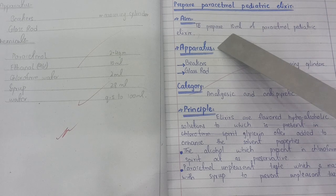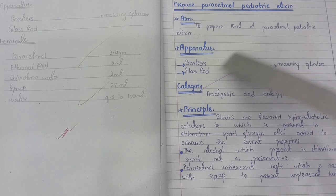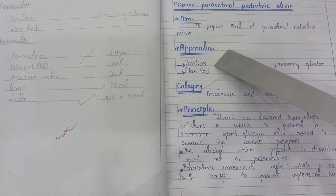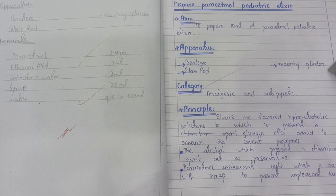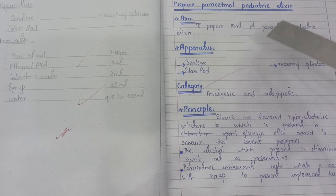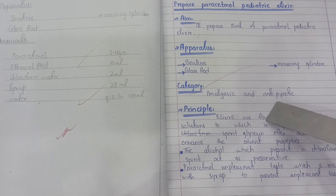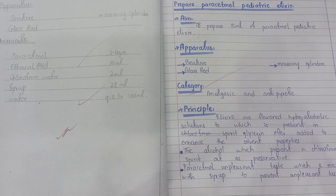The aim is to prepare 10 ml of this elixir. The apparatus you need for this experiment includes beakers, glass rods, and a measuring cylinder. The category: this elixir is used as an analgesic — it is used as a painkiller — and as an antipyretic, meaning it prevents or decreases fever.